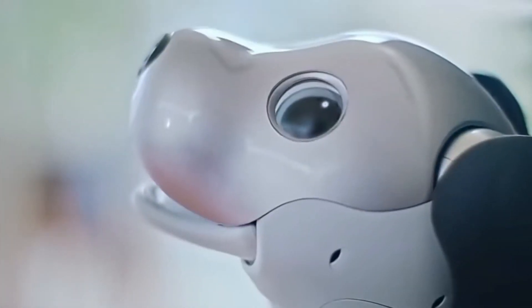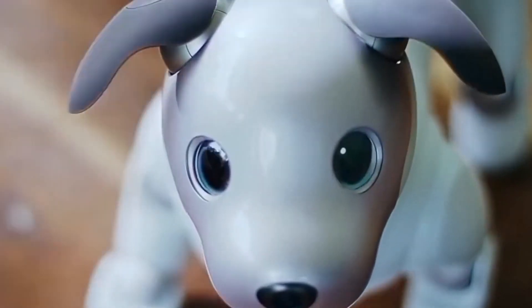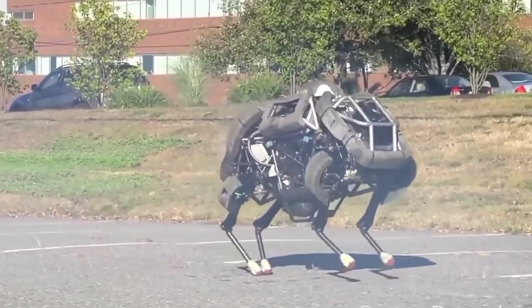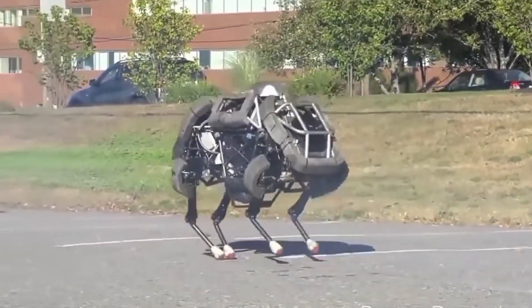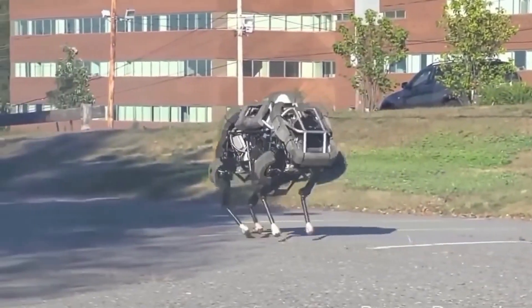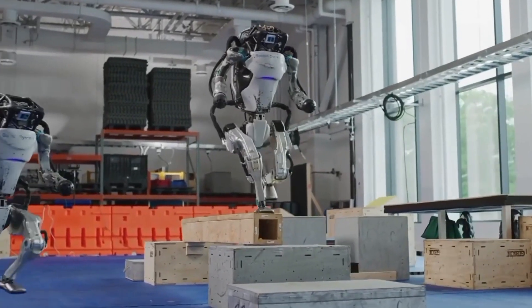According to Musk, such a robot will first be used to perform risky and dull work that no one wants to do, and then it will evolve to the point where it can look after people, prepare supper, and mow the lawn, among other things.